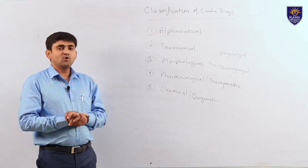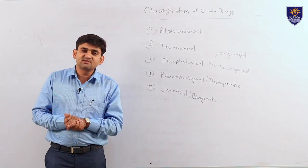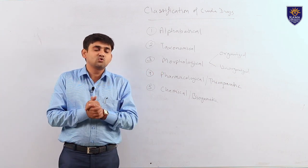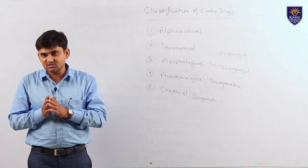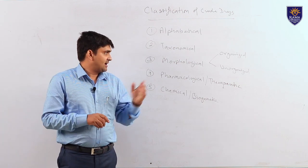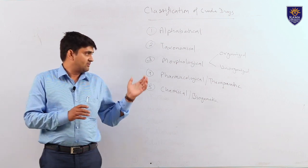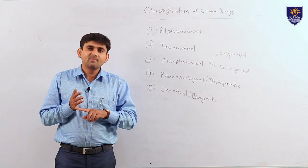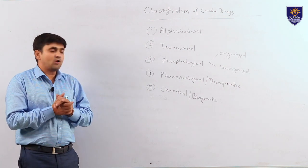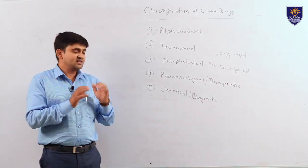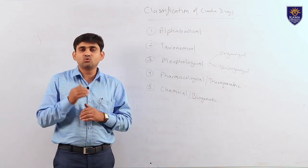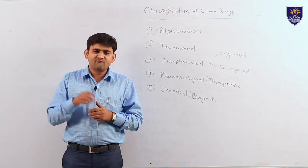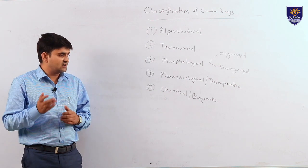Next is morphological classification, which is further divided into two parts: organized and unorganized. Organized drugs are those having a proper cellular structure and proper tissue arrangement. In this category, drugs are classified according to their plant part, like leaves, stem, flower, root, fruit, and so on. In the case of unorganized drugs, there is no proper cellular arrangement and no proper tissue arrangement. In this category we organize drugs like wax, resins, gums, extracts, and so on.